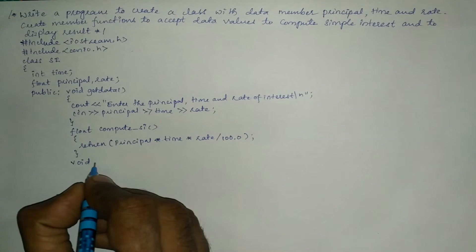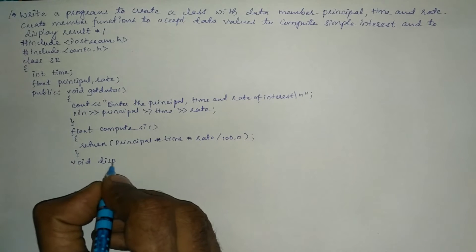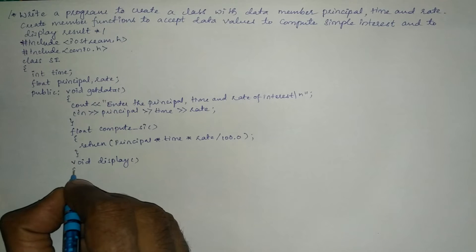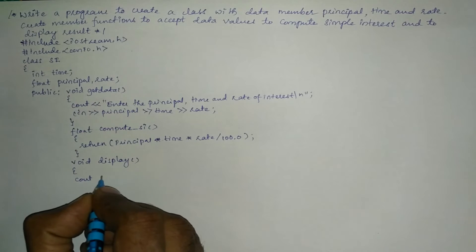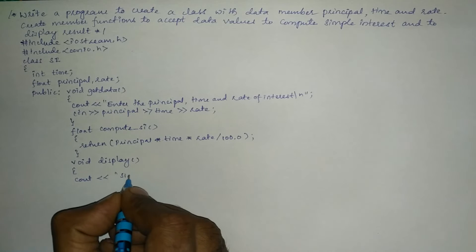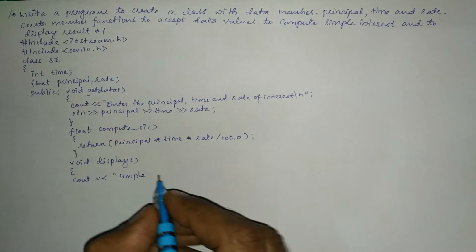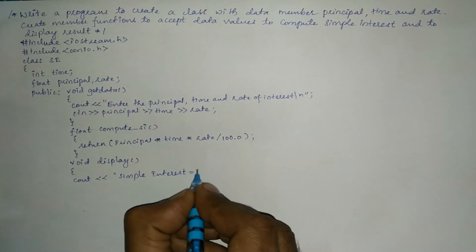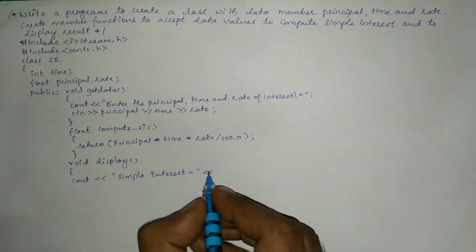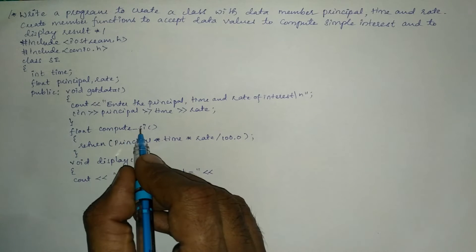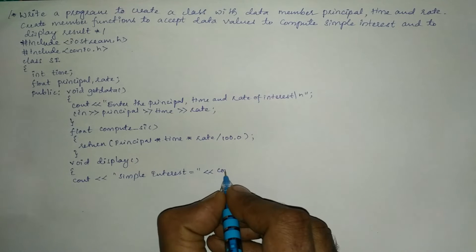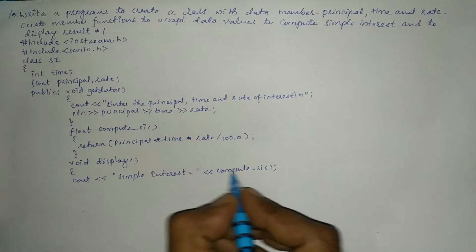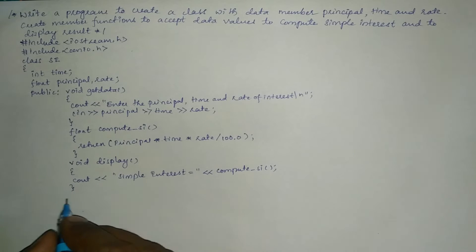Now I am going to define one more user-defined function used to display the result: void display with a curly open brace. Here I am going to write cout and output the text 'Simple interest is equal to', then call the compute_si function. Put semicolon, curly closing brace.